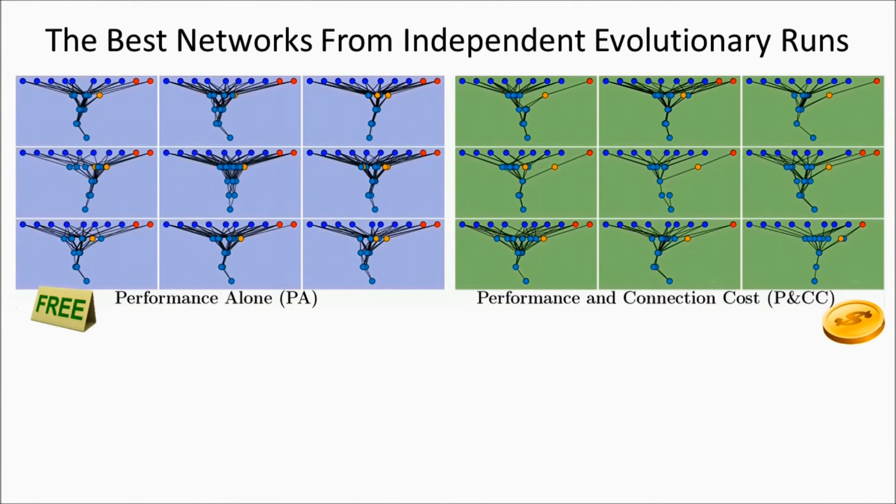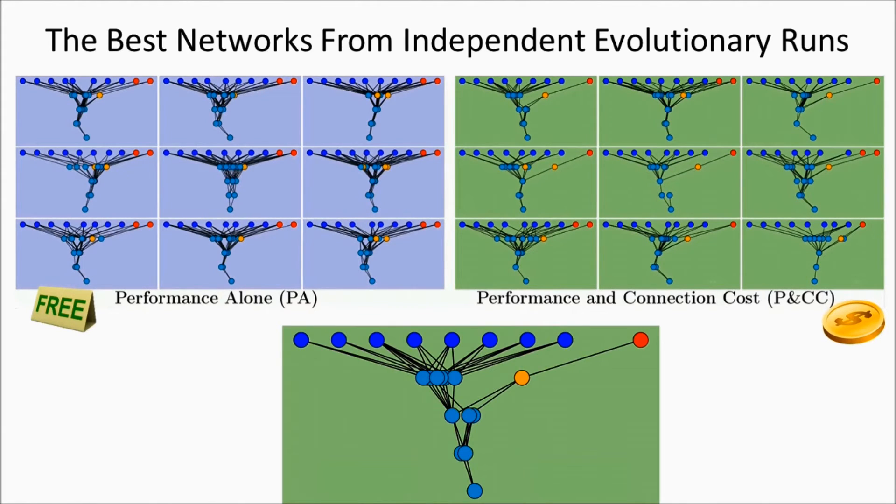While the connection cost networks are more modular, there is not a separate module for each task. Instead, with a connection cost, evolution created a module for learning skills, and a different module for delivering the reward and punishment signals necessary for learning. Networks with this modular decomposition perform better than entangled networks.